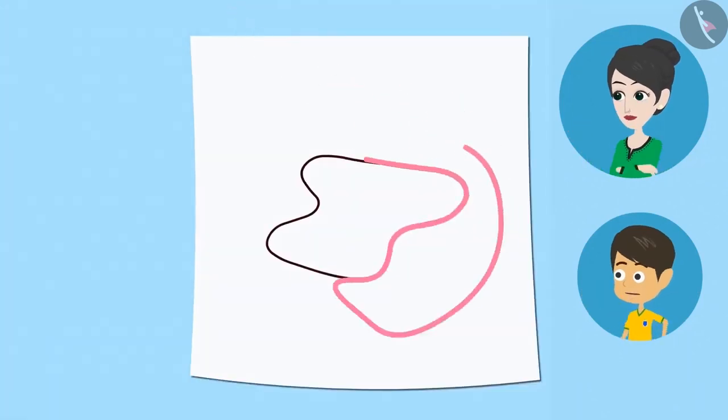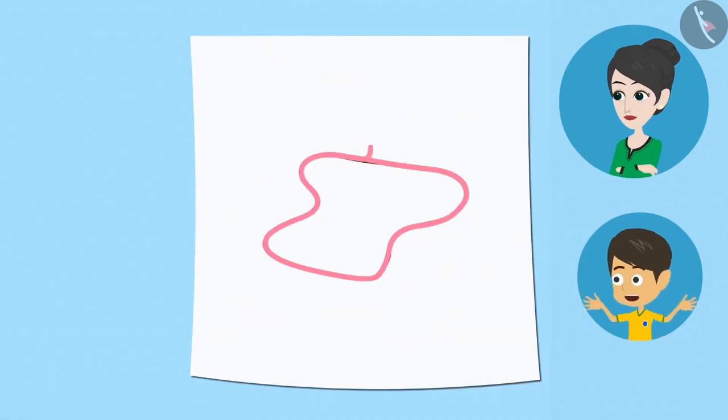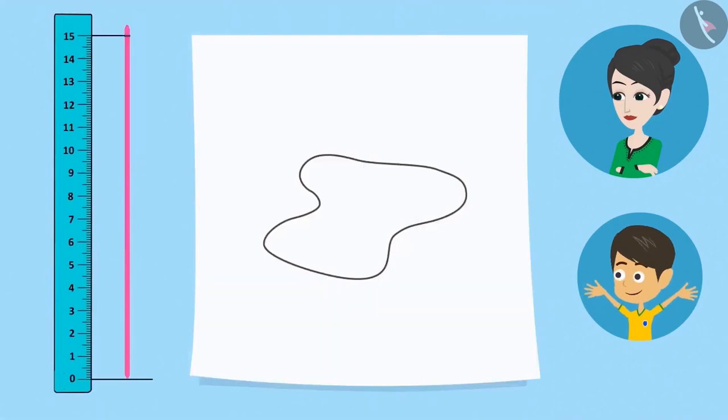I place a thread on the boundary. And then, I mark this thread where it is meeting the starting point. Now, I keep this thread straight and measure it with a scale. Look! I got the measurement! The length of this shape's boundary is 15 centimeters.